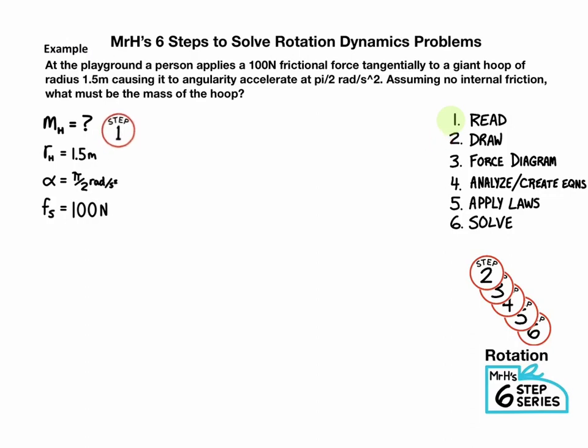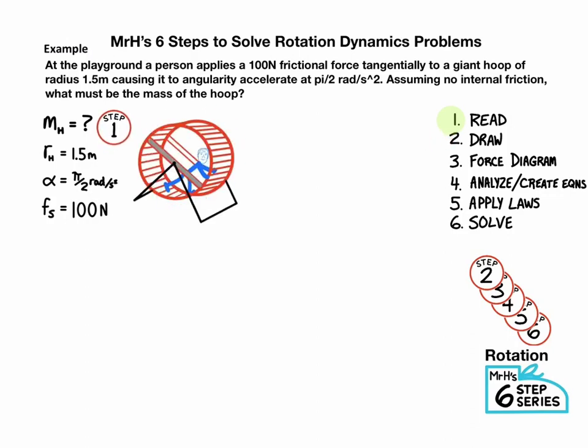Step 2 is to draw a picture, so go ahead and draw a hoop with a person in it. Step 3 is to draw a force diagram. Now, when we're dealing with rotational dynamics, it's important to draw the force vectors where they are acting. So in this case, it's acting at the edge, so we're going to draw the frictional force at the edge of this hoop, and we're going to label it static friction at a distance r.